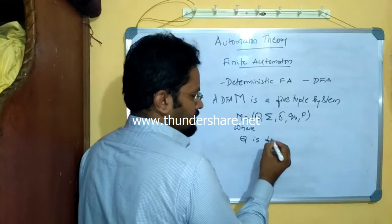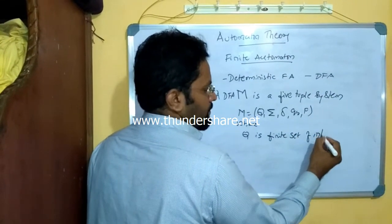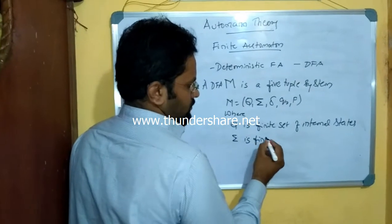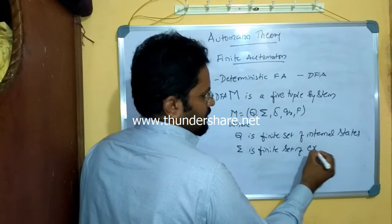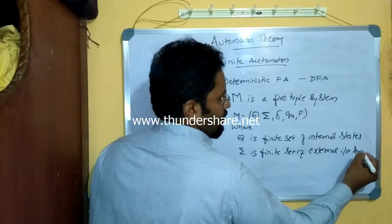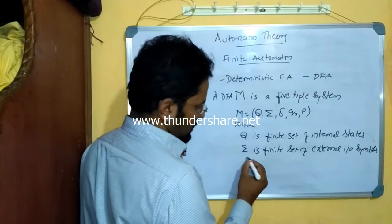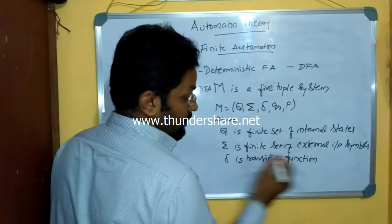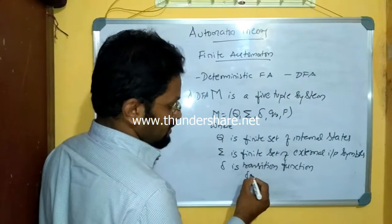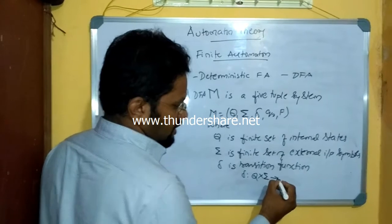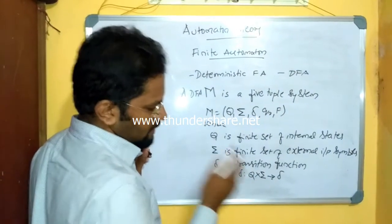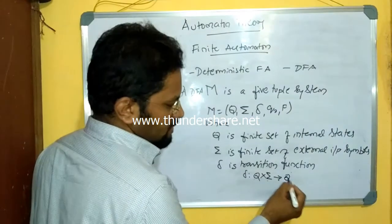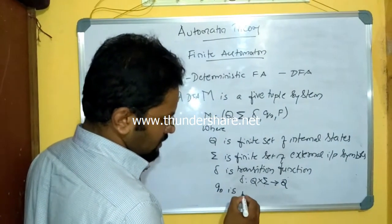Where Q is the finite set of internal states — these are the states in the DFA. Sigma is the finite set of external input symbols. We try to map states with sigma. Delta is the transition function, defined as Q cross sigma gives rise to Q. So for every state and every input symbol there is a mapping — that is, for every state and every input symbol there is exactly one resulting state.